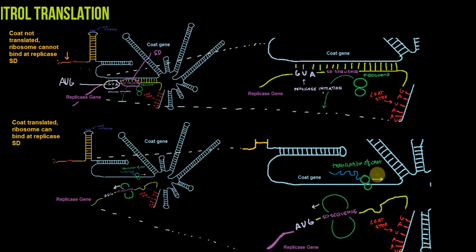when the coat gene is being translated, when the ribosome has hopped onto the coat gene and is translating that protein, what it does is break this base pairing between the Shine-Dalgarno sequence and this part of the coat gene. It breaks this base pairing that you see here. And that allows the ribosome to hop onto the Shine-Dalgarno sequence and then cause translation of the replicase gene, which is shown in this direction.